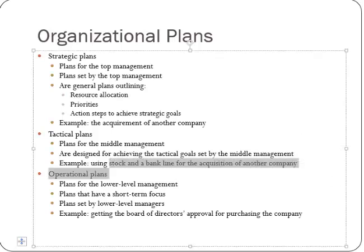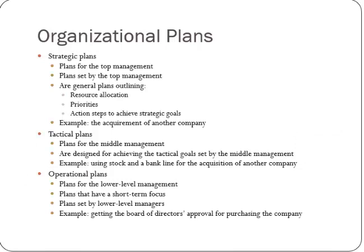One example of a tactical plan would be using stock and a bank line for the acquisition of another company — if you decide to expand by buying another company, you need to get the financing. Then there are operational plans — on-the-ground plans for lower-level management, the people actually running the assembly line or doing the actual selling. These have a short-term focus. For example, getting the board of directors' approval for purchasing a company would be the operational step. How to manage the assembly line to build a certain number of cars per day is another example of an operational plan.